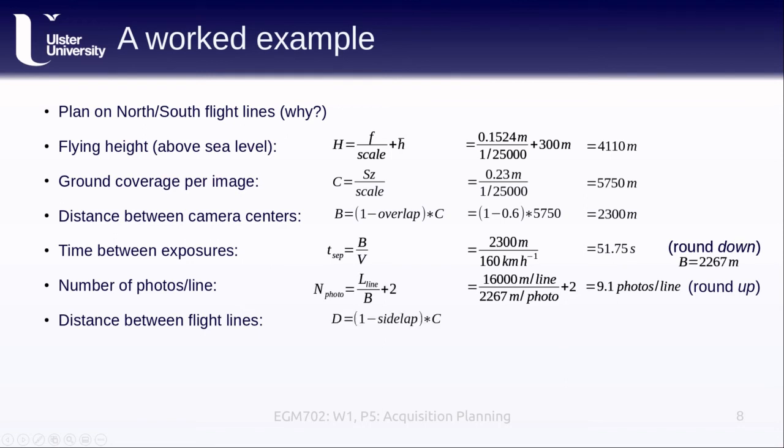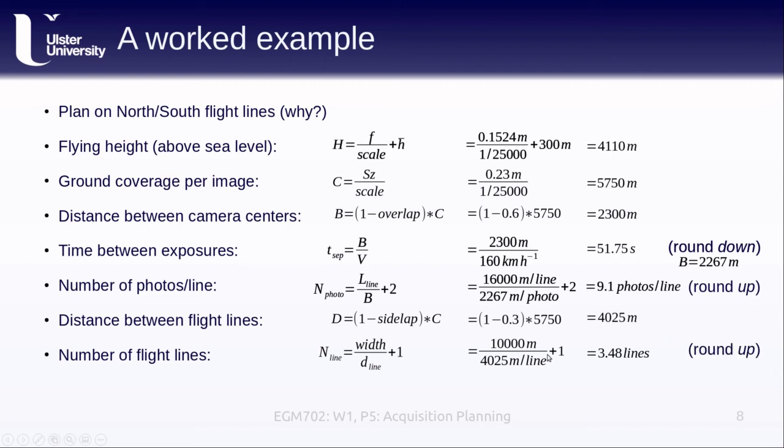The distance between flight lines is just the 1 minus the side lap, or the cross-track overlap of the images, multiplied by the ground coverage per image. So 1 minus 0.3 times 5750 gives us 4,025 meters. That's how much flight line spacing we have for our survey. The number of flight lines that we're going to use is just the width of our study area divided by the distance between lines plus one. We have 10,000 meters divided by 4,025 meters plus one, which gives us 3.48 lines. And again, we're going to round up to get four flight lines, which now means as well that we have to recalculate the distance between flight lines, and we get a new value of 3,333 meters.